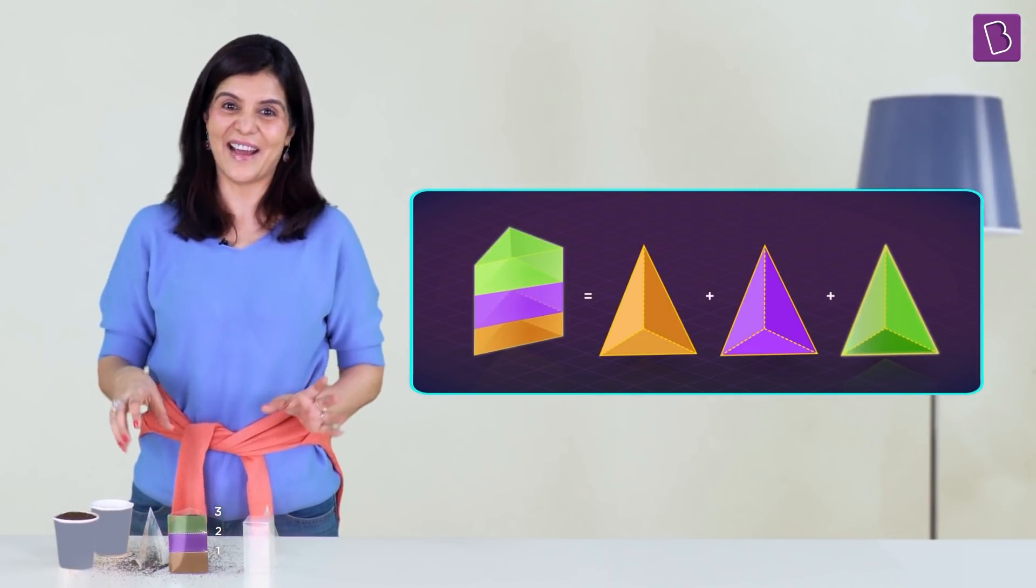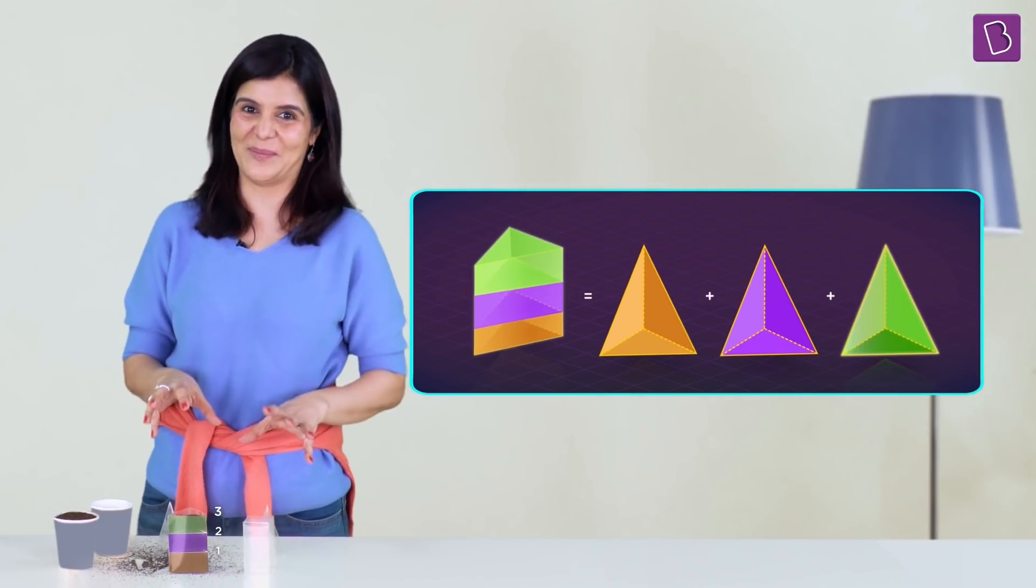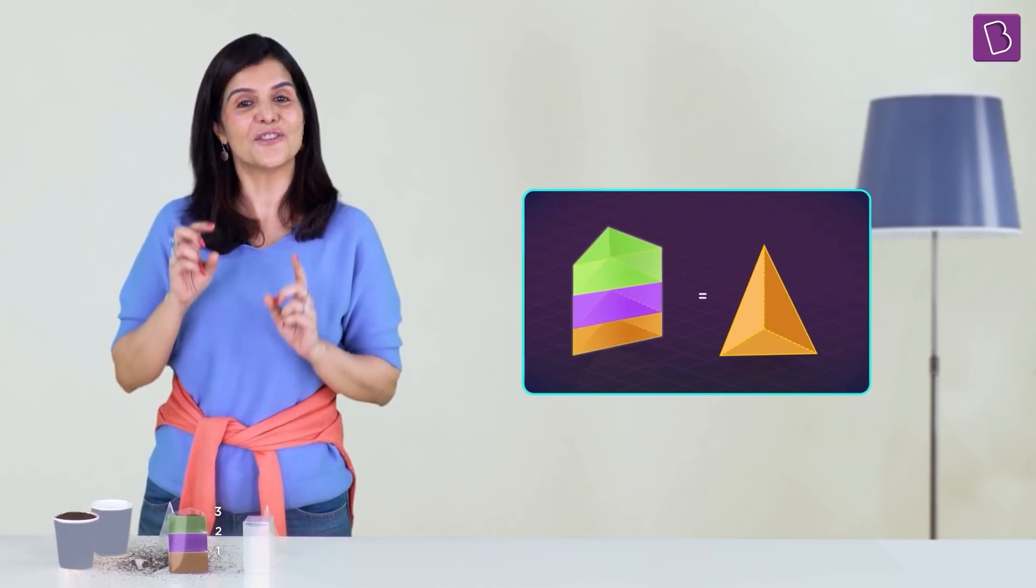Ta-da! Three pyramids are filling a prism. So the volume of a triangular pyramid is one third the volume of a triangular prism.